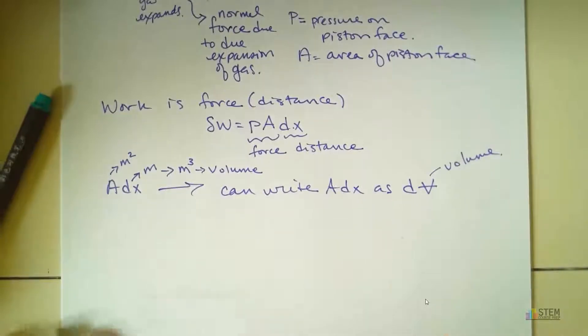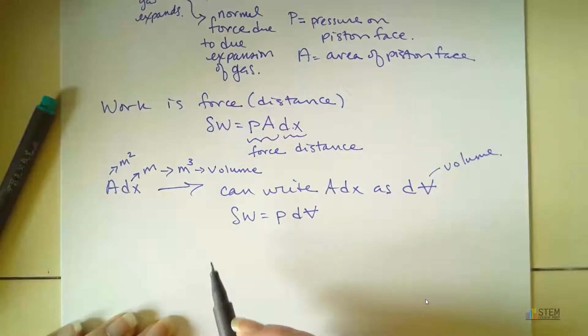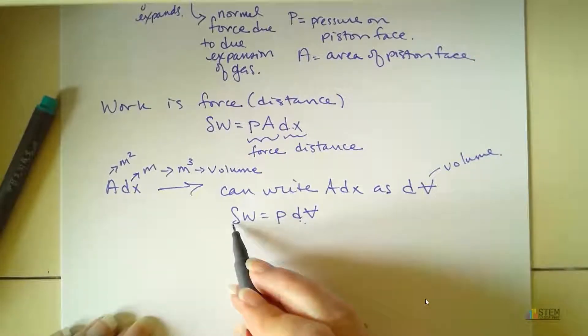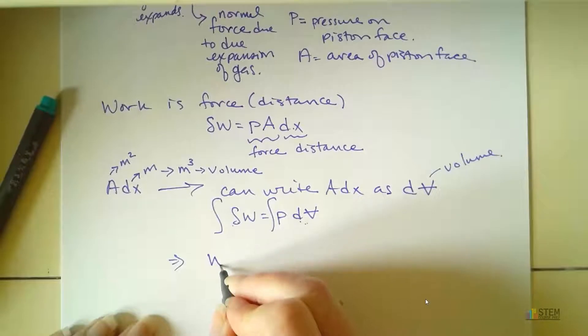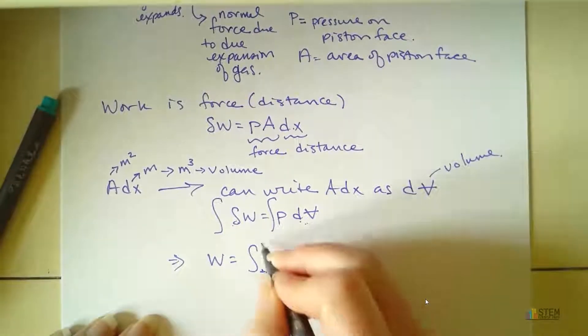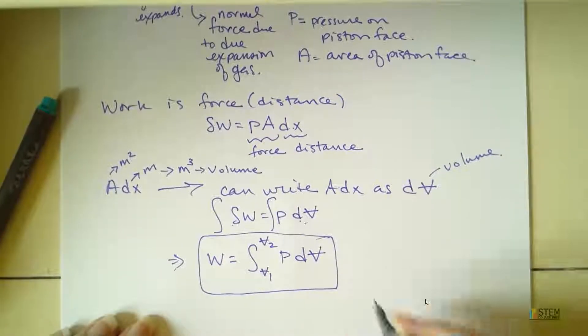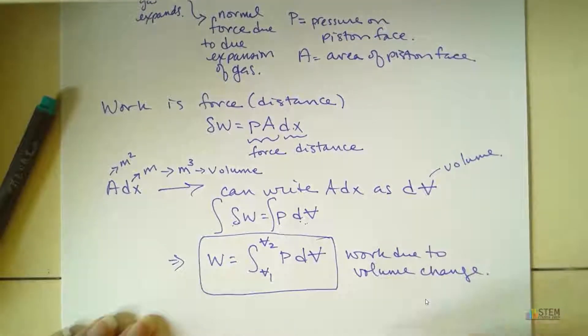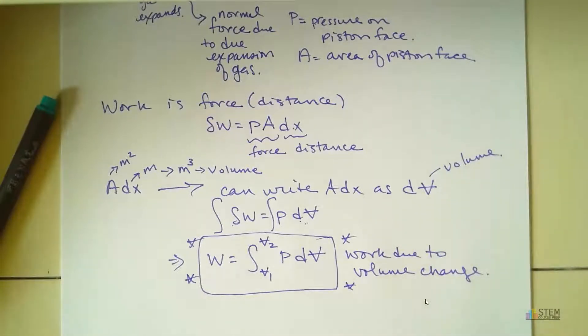So now if we do that, we can say that we've got pressure times DV. And this little delta here, this is just another symbol for change. So we've got change on both sides. We've got delta, and then we've got this D here. So that means we could integrate both sides. And then what we're left with is work equals the integral, volume 1 to volume 2, of the pressure times the change in volume. So this is going to be the work due to volume change. And we are going to use this a lot. And it's actually a pretty simple equation, and I'll show you how to use it in the next example. So I'll see you then.